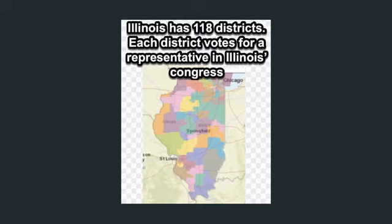Each section gets to vote for a person in our Illinois Congress. There are 118 sections and each section gets a person, and that person gets a job in the Illinois Congress and helps make decisions. This is very similar to how the United States Congress works — each state gets two representatives, and there are 50 states, so there are 100 representatives. Illinois is kind of broken up into many smaller sections, like many little states within one state, if that helps it make more sense.